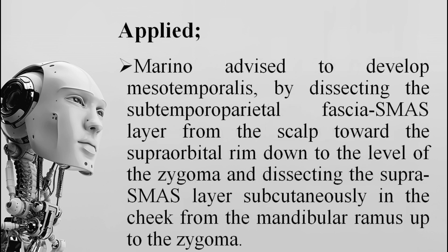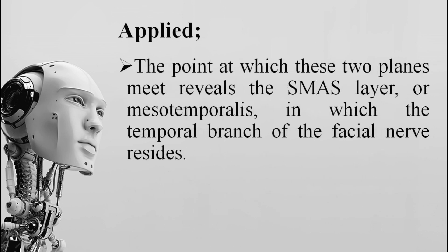Marino advised developing what is called the mesotemporalis — making a mesentery for the temporoparietal fascia intersection — by dissecting the temporoparietal fascia SMAS layer from the scalp toward the supraorbital rim down to the level of the zygoma, and dissecting the supra-SMAS layer subcutaneously in the cheek from the mandibular ramus up to the zygoma. The point at which these two planes meet reveals the SMAS layer, or the mesotemporalis, in which the temporal branch of the facial nerve resides.